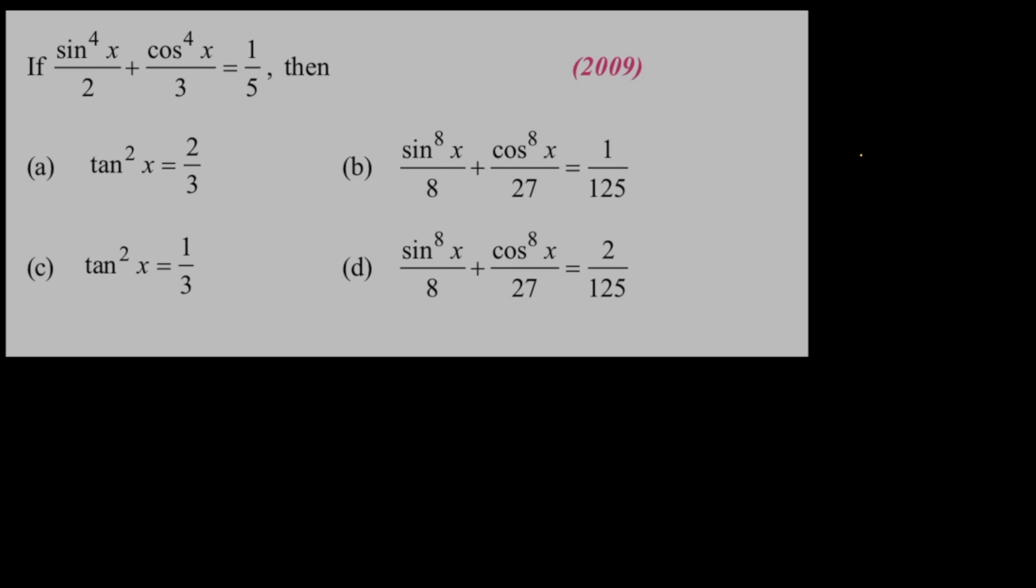The next question: if sin power 4 x by 2 plus cos power 4 x by 3 is equal to 1 by 5 then. So this is a question with one or more than one option correct. So let's see how this can be done.